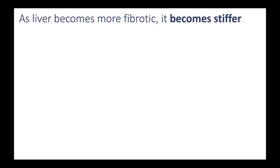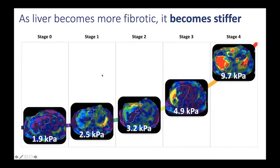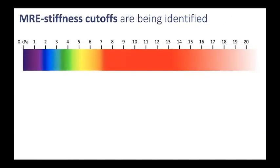Stiffness is a marker of fibrosis. As the liver becomes more fibrotic, it becomes stiffer. Here we have five patients — stage 0 fibrosis, stage 1, stage 2, stage 3, and stage 4 — and notice that the stiffness of these livers as measured by MR elastography is increasing as the fibrosis stage increases. Patients with advanced fibrosis, stages 3 and 4, have particularly stiff livers compared to those with lower stages of fibrosis.